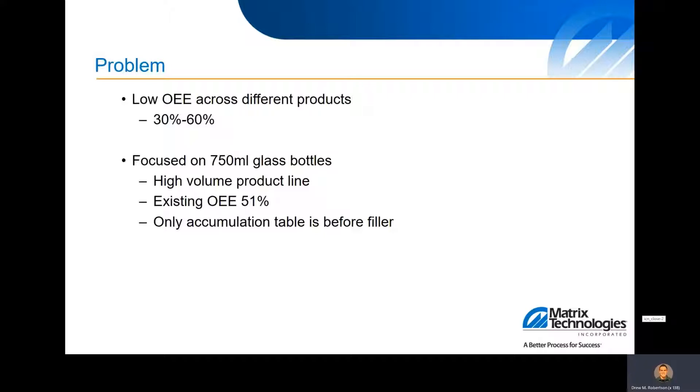One of our clients came to us looking for some control updates to their existing line to help boost efficiency. Right now they're running at about 30 to 60% OEE depending on the product they're running. For this case study we're looking at the 750 milliliter glass bottles. It's one of their higher volume products and about 51% OEE today.